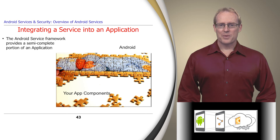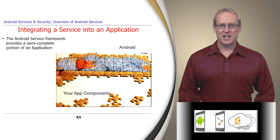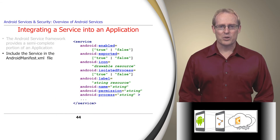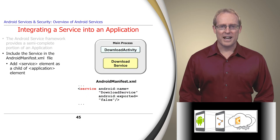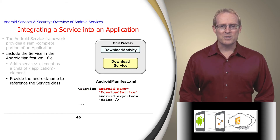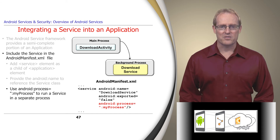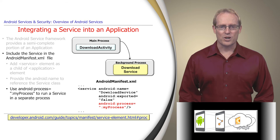The Android service framework provides a semi-complete portion of an application. After the service is extended and its hook methods implemented, a description of it must be included in the Android manifest file together with other components to help complete the application. This XML file contains information that Android needs to plug in various activity and service components and execute the application. Integrating a service involves adding a service element as a child of the application element in the Android manifest file, then providing a name to reference the service class. Services don't automatically run in separate processes or threads; however, making a service run in a separate process just involves adding the process element to the Android manifest file.